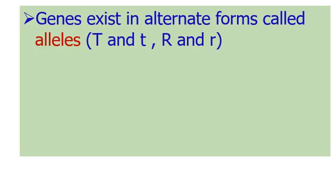Similarly, seed shape is another character, with the gene designated R. Seed shape can be round or wrinkled. Round shape is dominant, represented by capital R. Wrinkled seed is represented by small r. Capital R and small r are alleles of the seed shape gene.